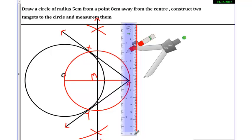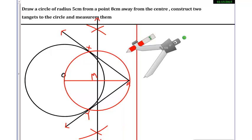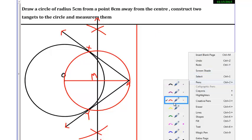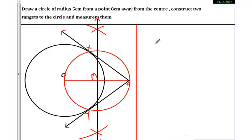Now let's write the steps of construction here. We will use a different color pen so that it looks better. First of all, what we did: draw a circle with center O and radius 5cm. Then take a point A which is 8cm away from the center.